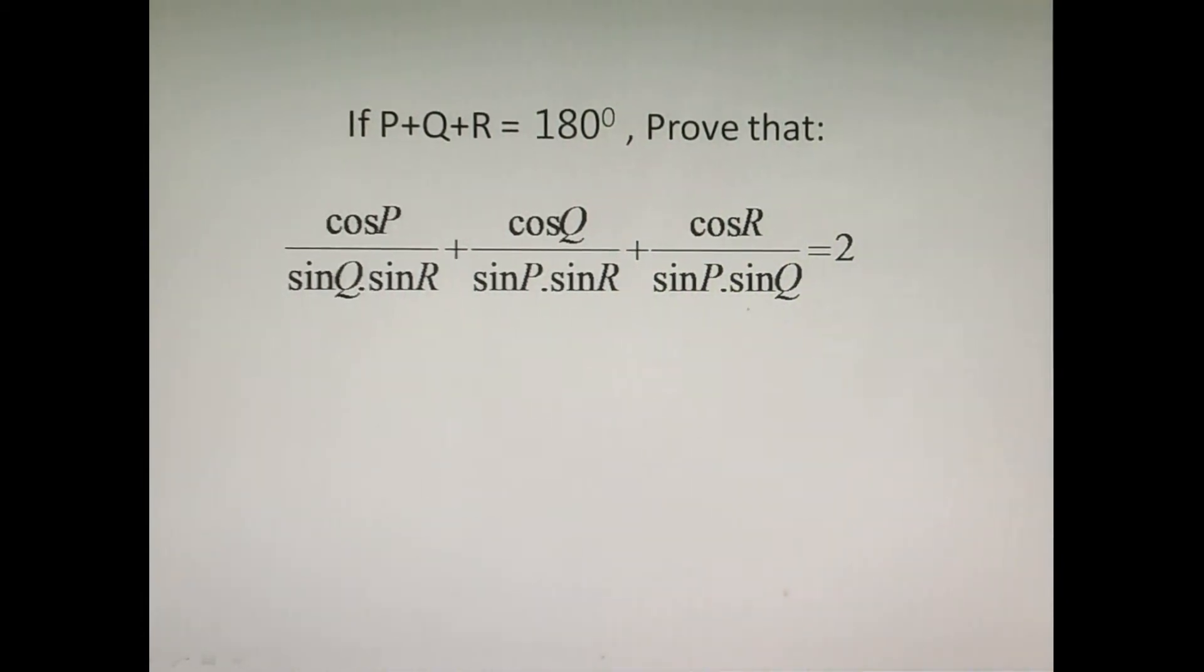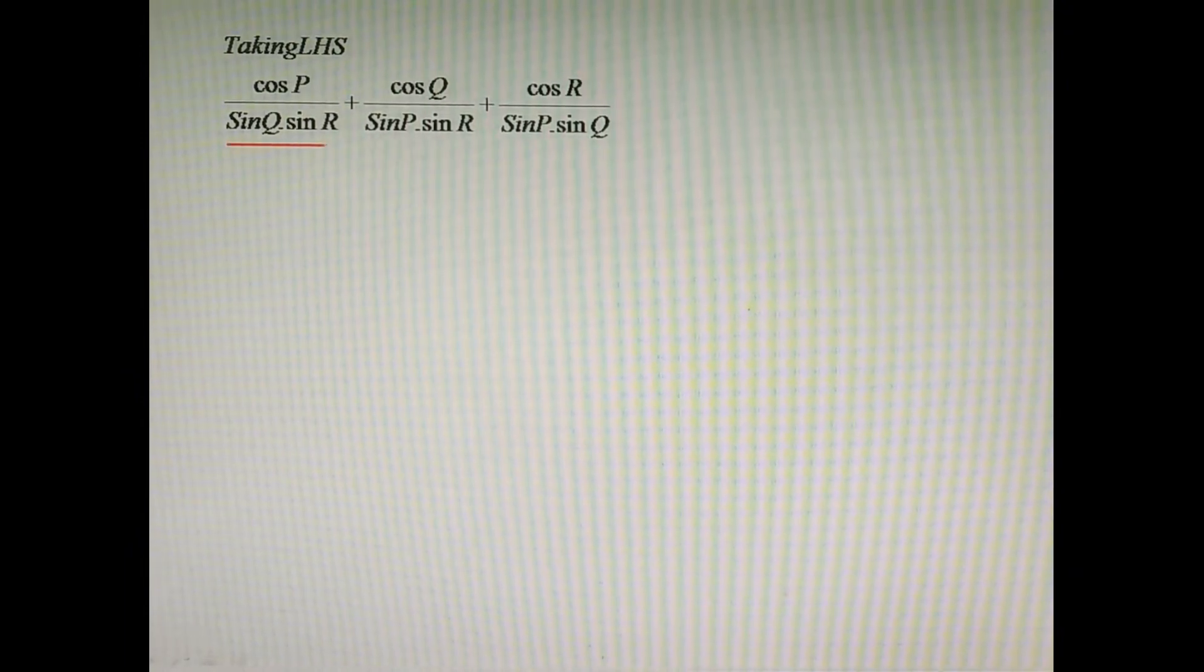So let's start from LHS. On the left-hand side we have cos P by sine Q into sine R, plus cos Q by sine P into sine R, plus cos R by sine P into sine Q.